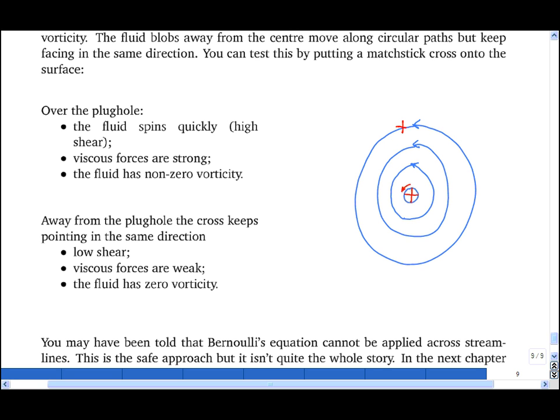However, if you were to put a cross on this streamline here, you'd find that its orientation wouldn't change as it traced out this circular path. So even though it's tracing out a circular path, the fluid at that point is not rotating. It has no vorticity.